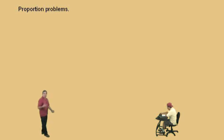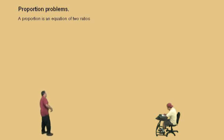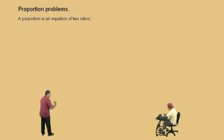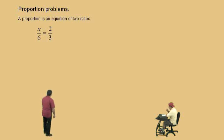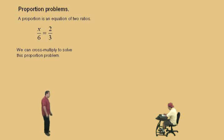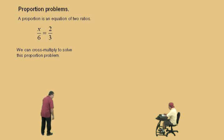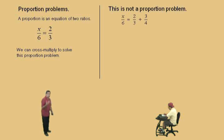All right, Charlie, what is a proportion? That's right — it's an equation, but it's an equation of two ratios, which basically means you have a fraction equal to a fraction. Now, our goal is to solve for x. We can use the cross multiplication technique to solve the proportion problem. Now, it's important to realize that you want to cross multiply when you have a proportion problem. If you do not have a proportion problem like this problem here, you don't want to try cross multiplying.